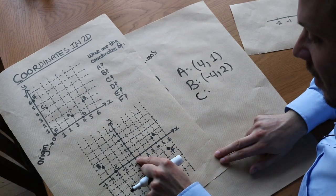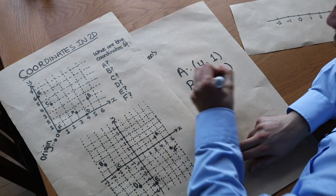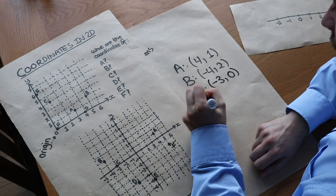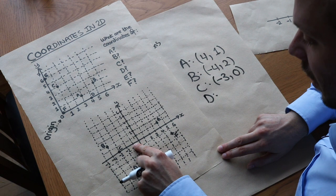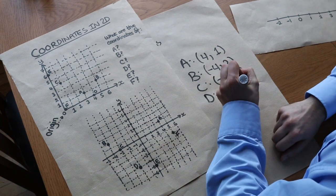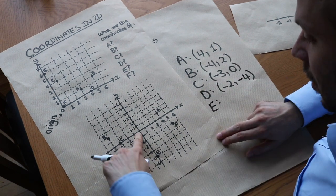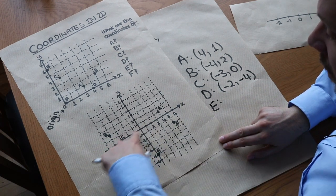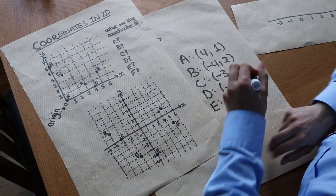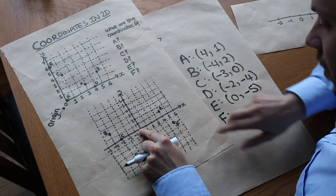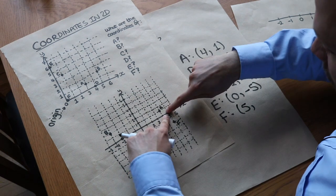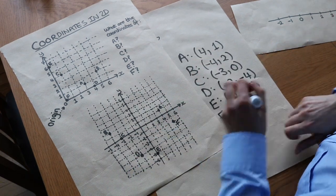What about C? On the x-axis we move negatively: minus one, minus two, minus three. But we don't move in the y-direction at all, so it's zero — C is (-3, 0). What about D? We move two places to the left in the x-direction — so minus two — then we move down four in the negative y-direction, giving D as (-2, -4). For E, we don't move in the x-direction at all — zero — but we move down five, so E is (0, -5). Finally F: we go five in the positive x-direction and two down in the negative y-direction, so F is (5, -2).